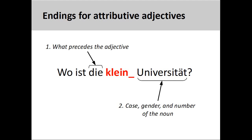German also has attributive adjectives. Unlike predicate adjectives, however, attributive adjectives require strong or weak endings. As we will see in the coming slides, these endings are determined: one, by whether the adjective is preceded by an ein-word, a der-word, or nothing at all; and two, by the case, gender, and number of the noun that the adjective modifies. It is usually quite logical to determine the ending of an attributive adjective, although you may have to memorize a few charts.